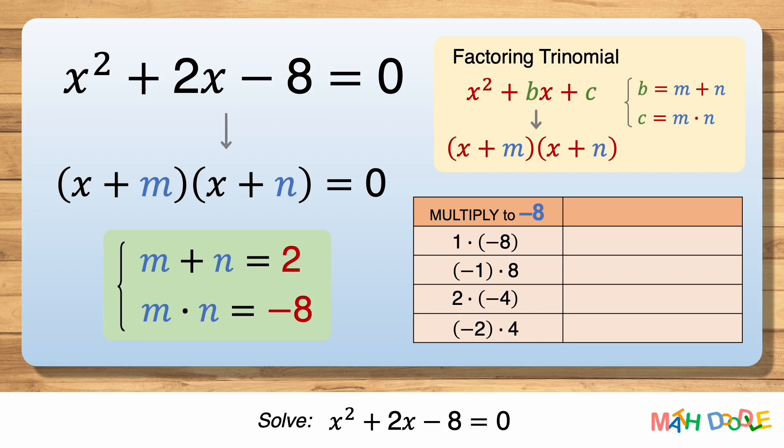Now, let's see which of these combinations adds to 2. 1 plus minus 8 is minus 7, so 1 and minus 8 do not add to 2. Minus 1 plus 8 is 7, so minus 1 and 8 do not add to 2. 2 plus minus 4 is minus 2, so 2 and minus 4 do not add to 2.